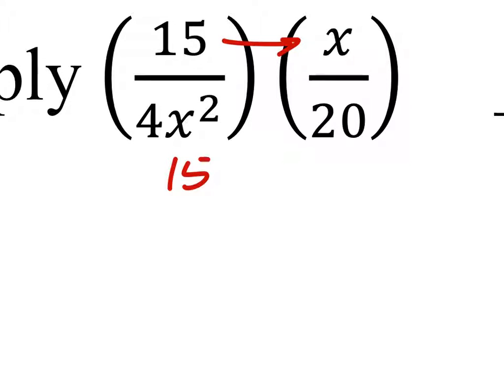Fifteen times X is 15X, going over 4X times 20. So we're just going to multiply the two numbers. 4 times 20 is 80, and we'd have 80X squared there.